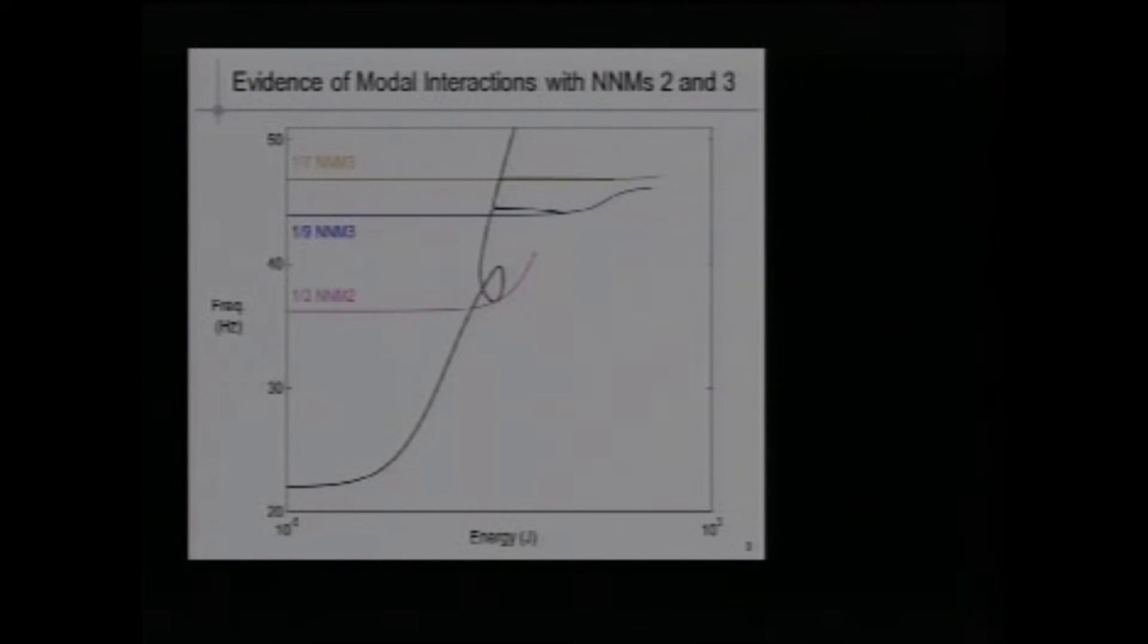These tongues or loops correspond to modal interaction. Here we draw other backbones in the frequency energy plot, but we draw them at one-third of their frequency, because if you are periodic with a motion with a period T, you are also periodic with a period 3T. This allows you to see that actually this loop is an interaction between nonlinear normal mode 1 and 2. It's a 3 to 1 interaction. This one is a 9 to 1 interaction with 3, and this one is 1 to 7 with 3. Keep these modal interactions in mind, because they will play a central role when looking at isolated resonance curves.